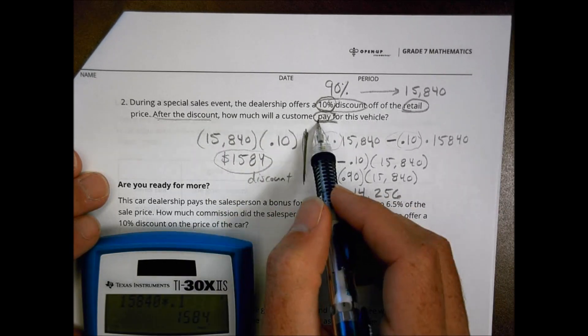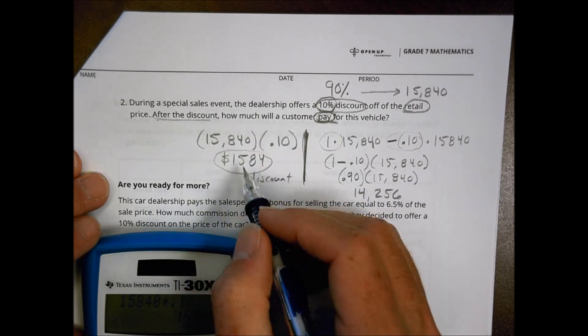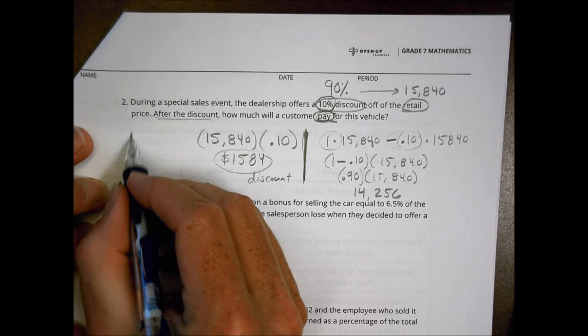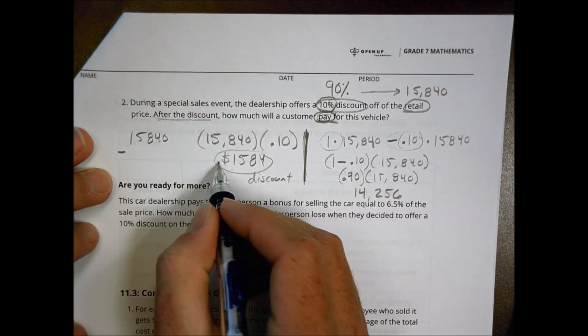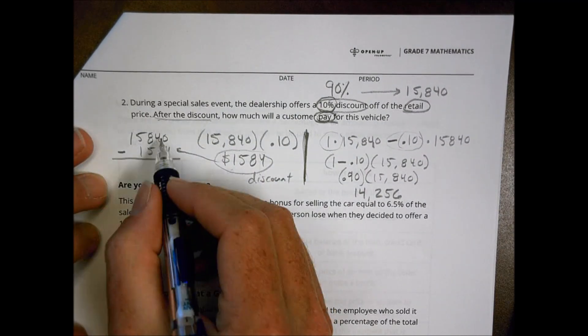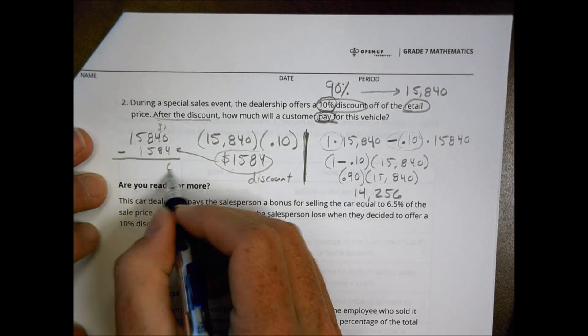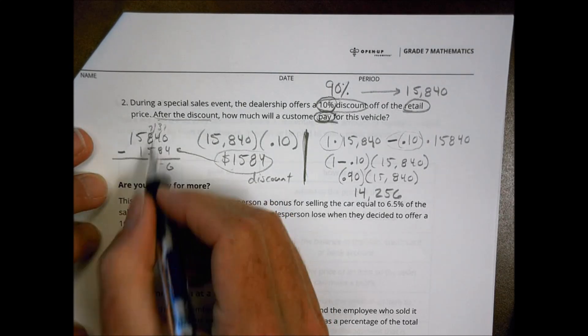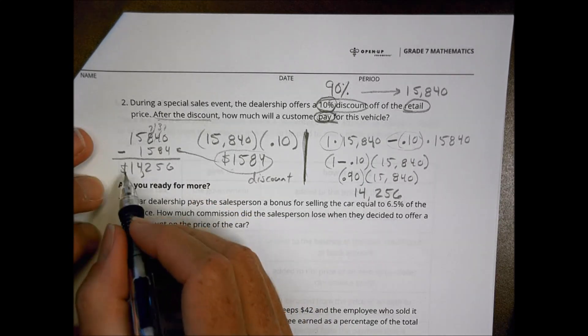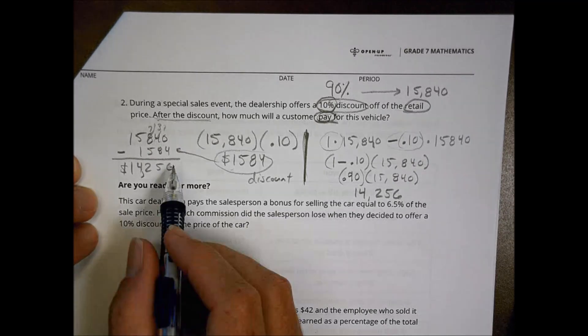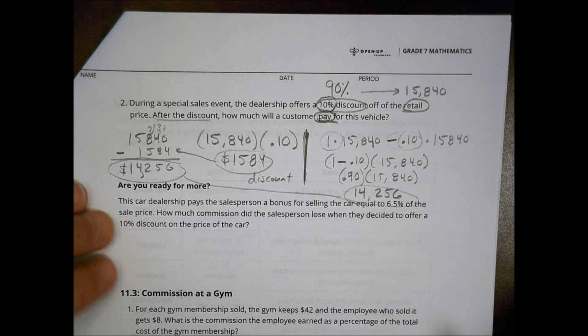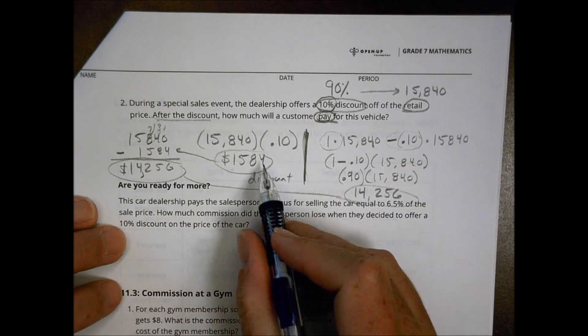That doesn't, though, say what the customer will pay for the vehicle. To find that, what I would need to do, what I'd have to take the price, 15,840, and subtract the discount, which is $1,584. When I do that, what happens then is I end up with, 13 minus 8 is 5, and 2, and 4, and 1, while they end up by subtracting that is with 14,256. Notice that this number is the same one that's right here.